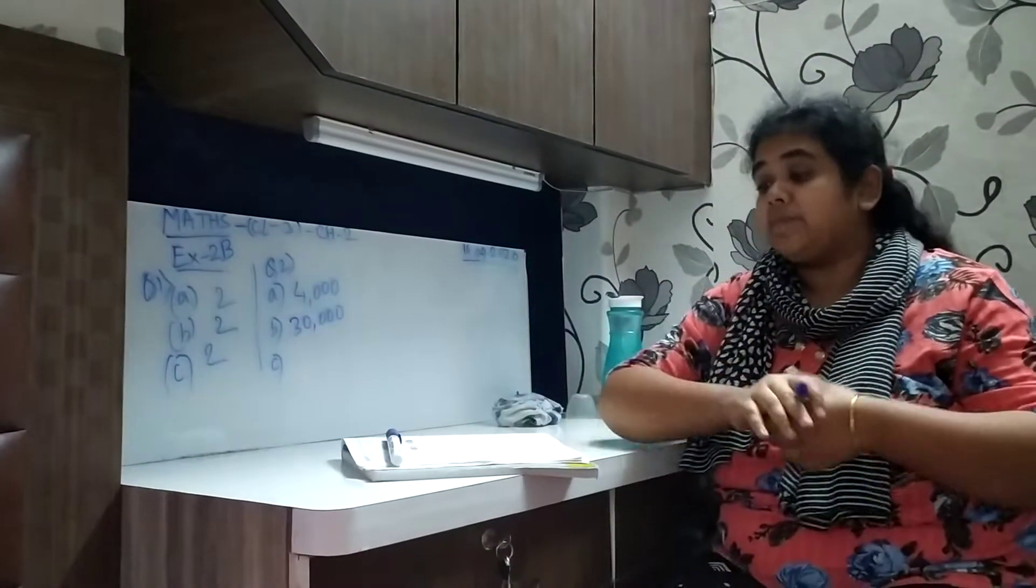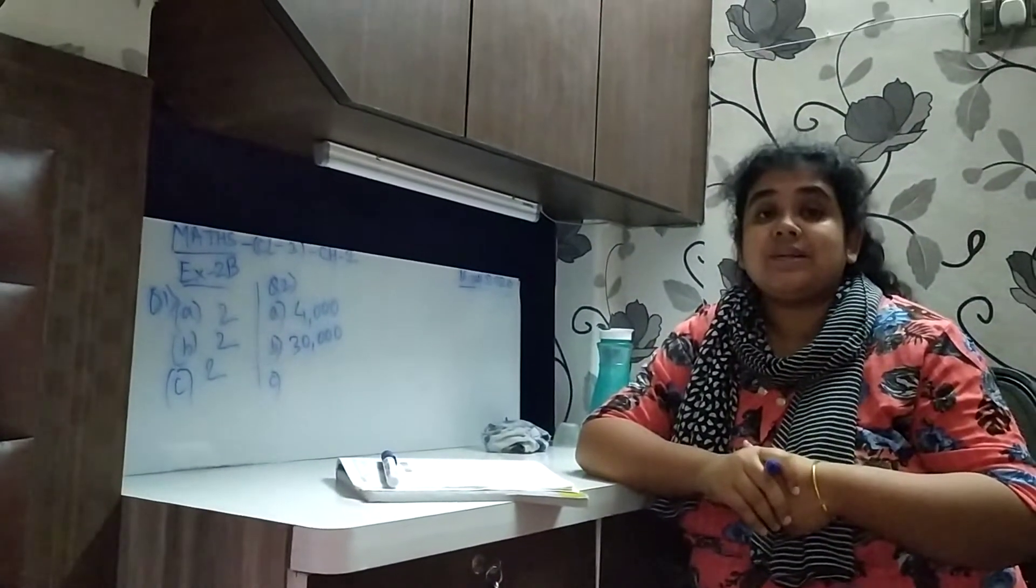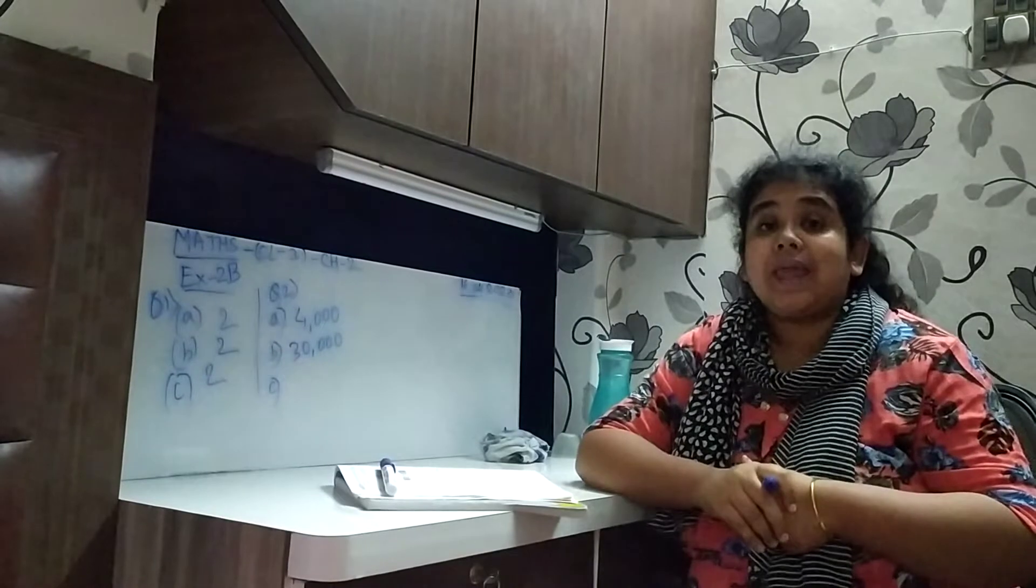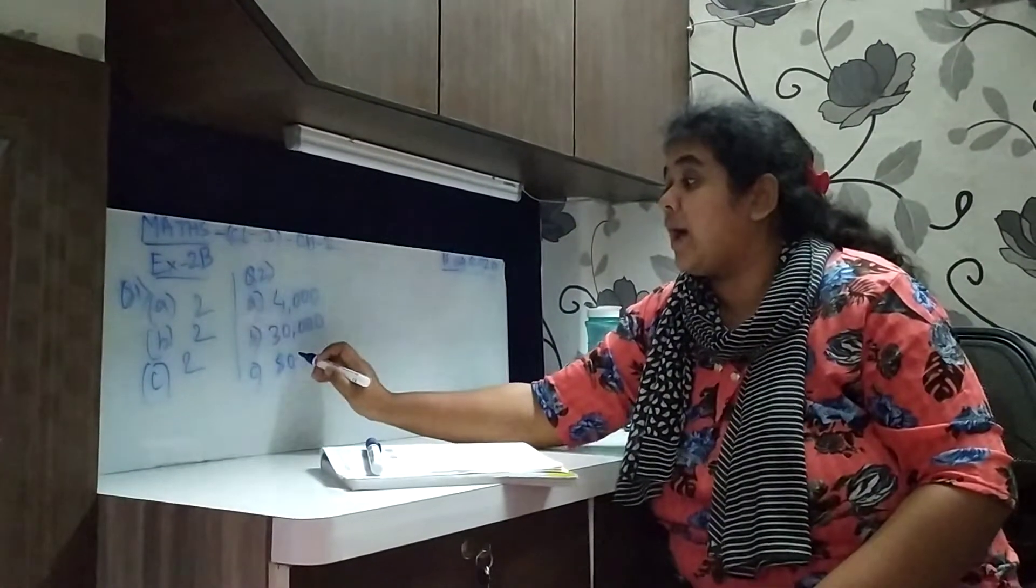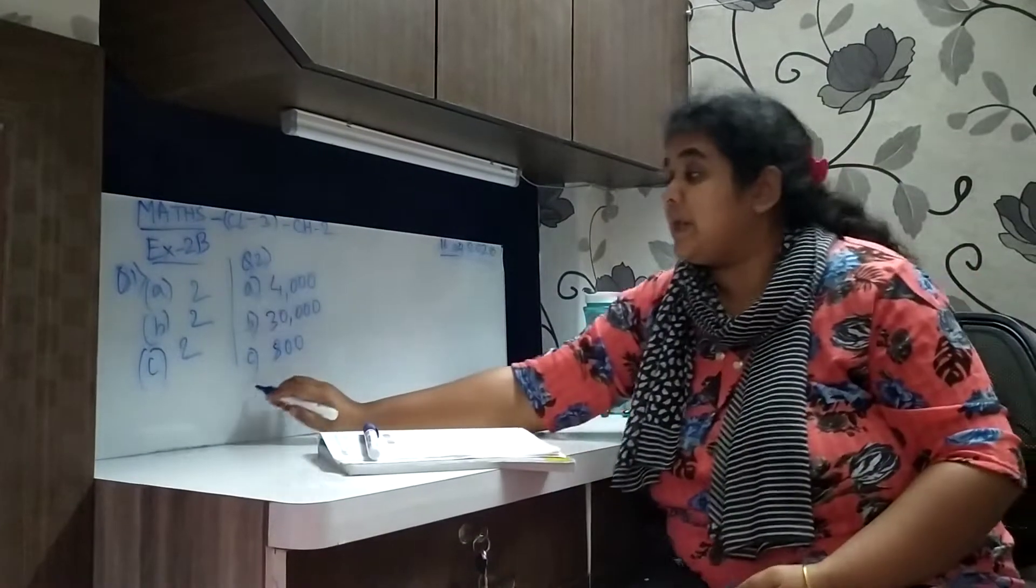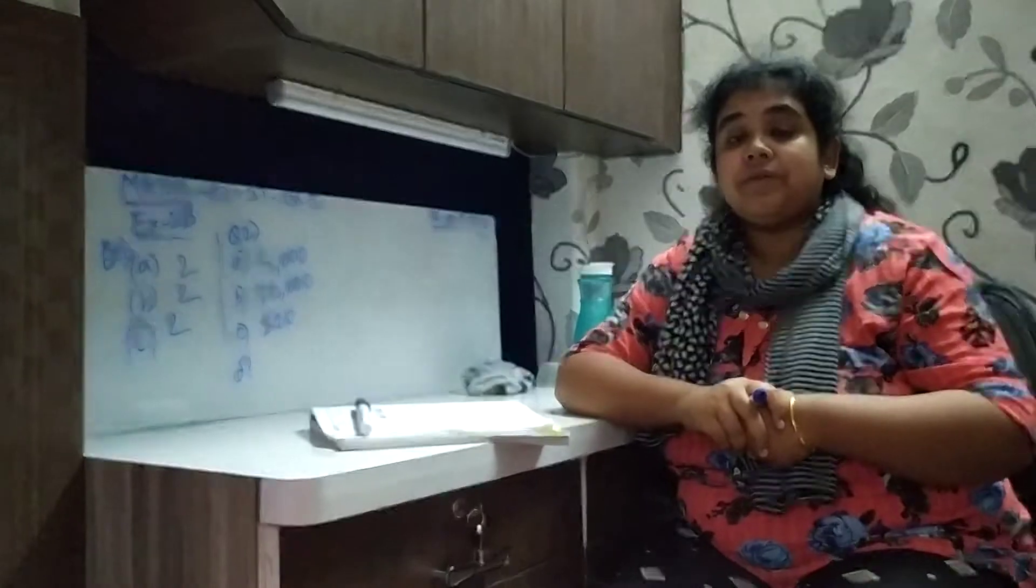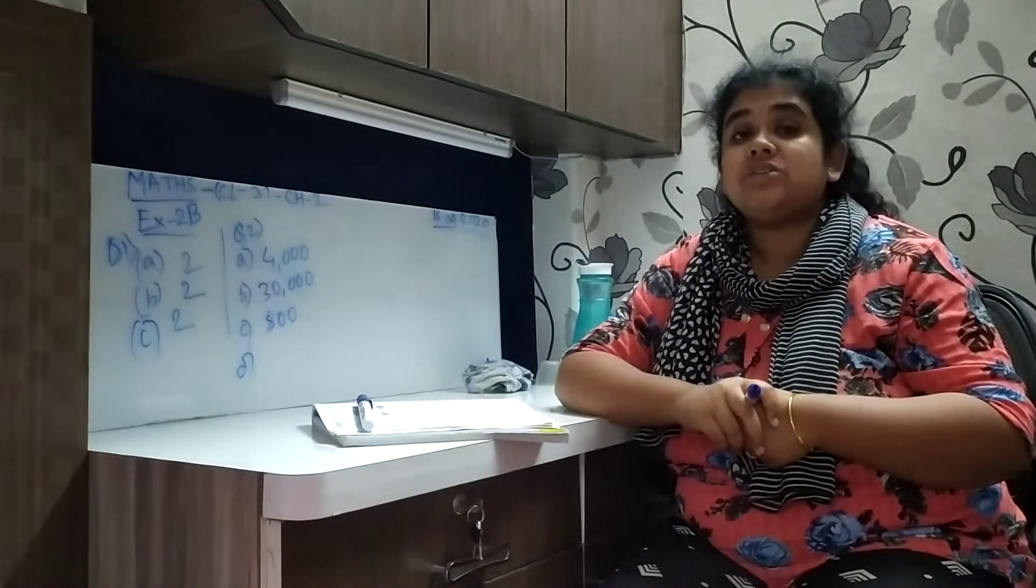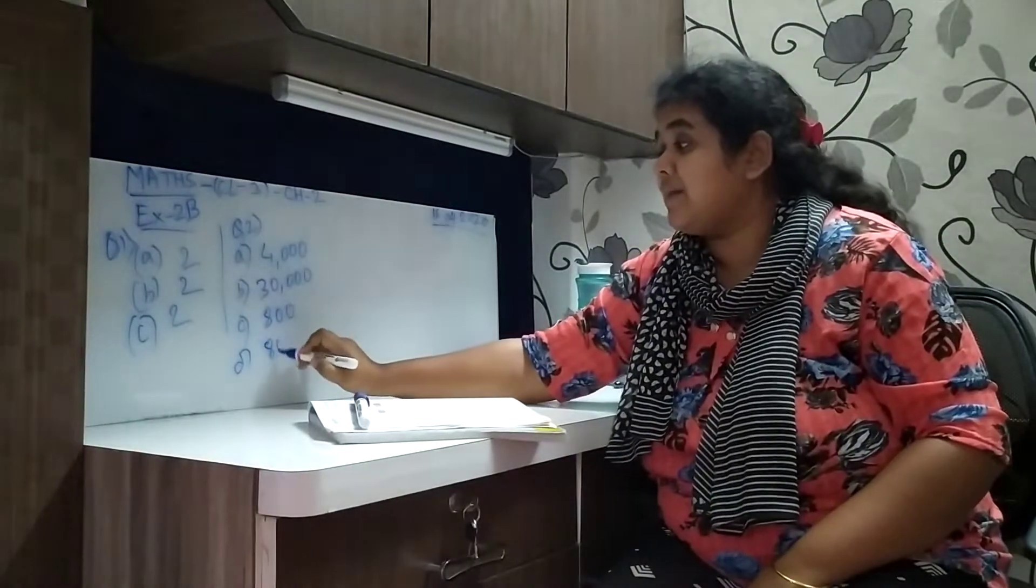Number C, 3,75,861. The underline digit is 8. So the face value of 8 is 800. Number D, 6,72,831. The underline digit is 8 and the face value of 8 is 800.